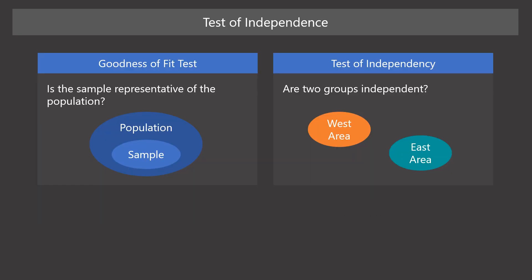Another type of hypothesis testing where we use Chi-Squared as a test statistic is a test of independence. In a test of independence, we test whether two groups are independent or not. In a goodness of fit test, we test whether the distribution differs between the sample and the population — that is, whether the sample is a representative subset of the population. On the other hand, a test of independence is used when we have two or more groups of categories, and we want to test whether those groups are independent or not.